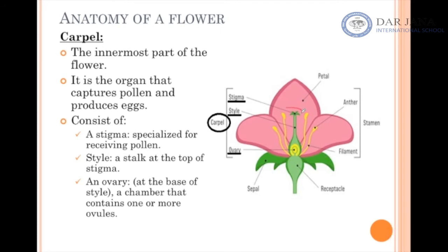The female part of the flower is called the carpel. It is the innermost part of the flower. It captures the pollen and produces eggs at the bottom. A carpel consists of three parts: the stigma, the style, and an ovary at the base of the style.